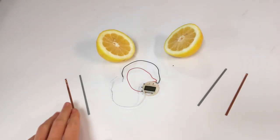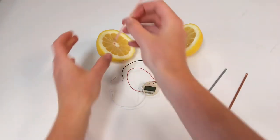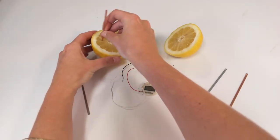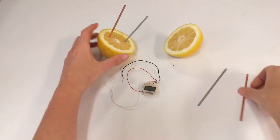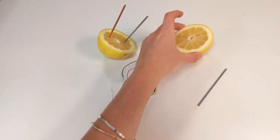Begin by inserting one copper piece into one side of a lemon half and a zinc piece into the other side of the same half. Then repeat on the other half of the lemon.